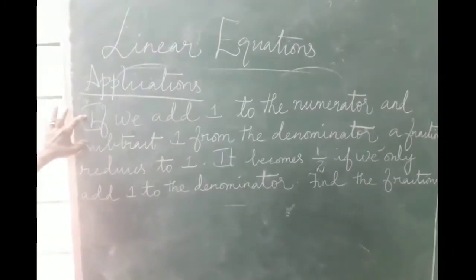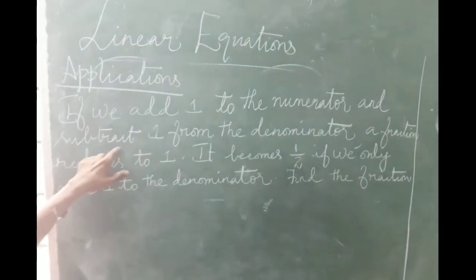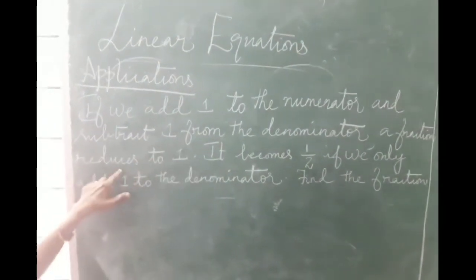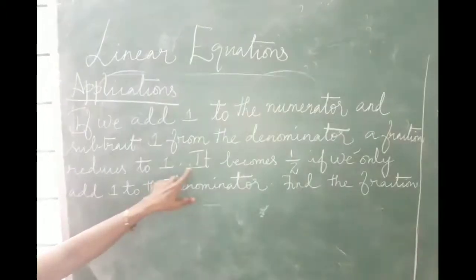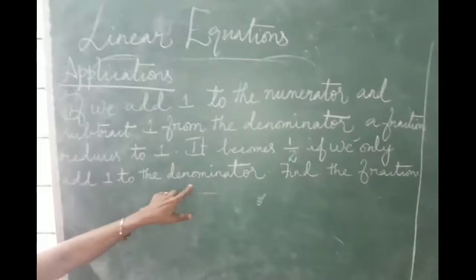To start with, I am doing fractions. If we add 1 to the numerator and subtract 1 from the denominator, a fraction reduces to 1. It becomes 1 by 2 if we only add 1 to the denominator. Find the fraction.